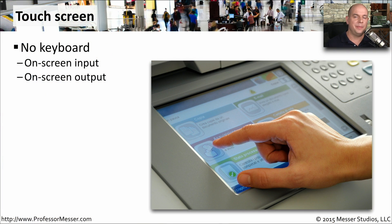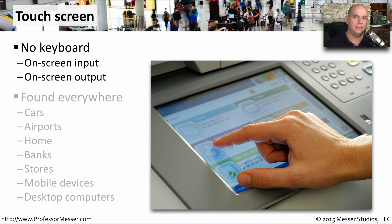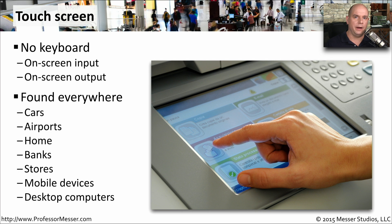One very common device that acts as both input and output is a touch screen. We see information on the screen as output, and we can push on the screen with our finger to provide the input. These touch screens are everywhere — on our car information systems, at airports when we're checking in, in our home, at banks, in the stores where we're shopping, on our mobile devices, and even on our desktop computers.